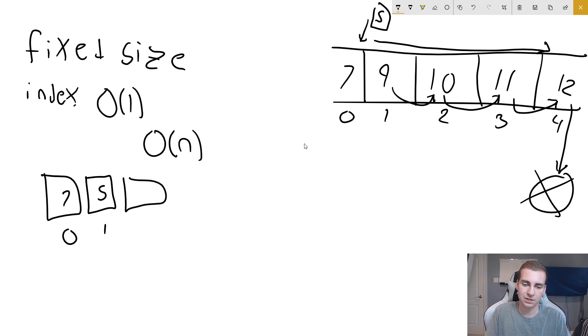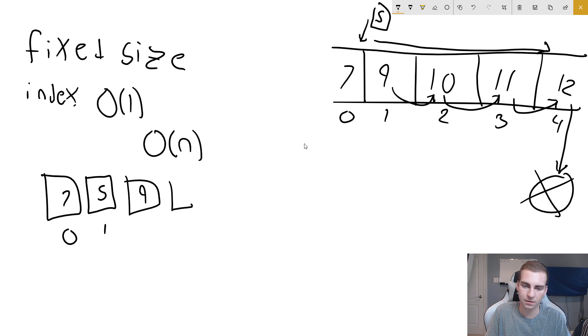Once we insert that item, we have nine at index two, ten at index three, and eleven at index four — but these are now moved to new indexes: two, three, and four.